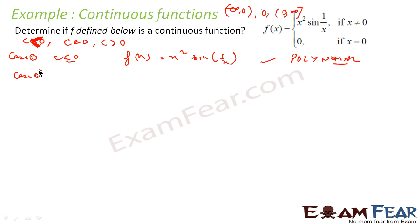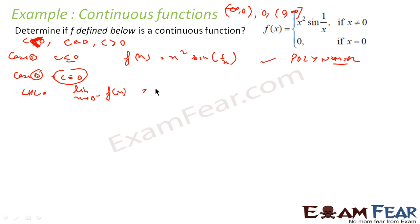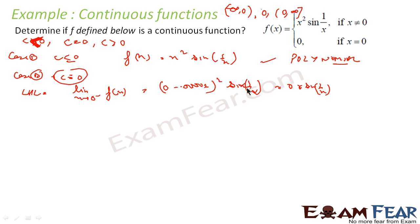Let's take case 2, c is equal to 0. Here we have to decide whether the left hand limit and right hand limit are equal or not. The left hand limit is limit x tends to 0 minus of f(x), which is approximately 0.000001 squared times sin(1/x), which is almost equal to 0 times sin(1/x). So the left hand limit is almost equal to 0.